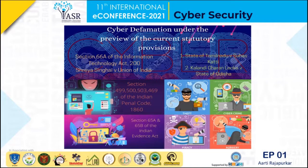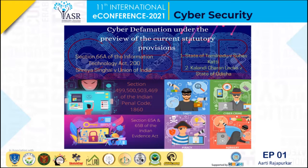Currently, we have Section 499 of the IPC — the Indian Penal Code — which talks about the offense of defamation. Where if a person intends to cause harm to the reputation of another person, let's say by spoken words or by published material, then it is said that he has committed the offense of defamation.